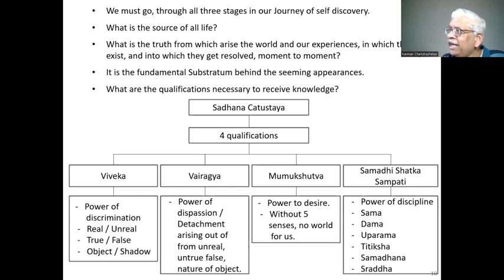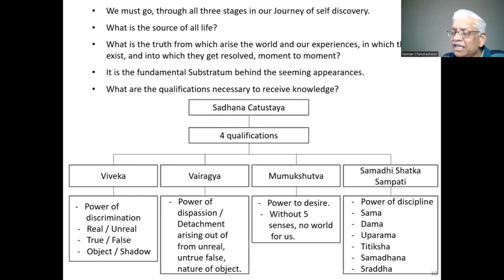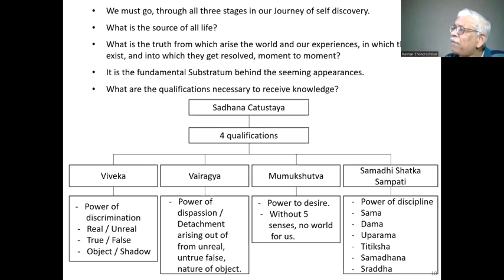Sama means control of the mind. Dama means control of the sense organs. Uparama means stability — the ability to remain in a controlled fashion and continue that control. Titiksha means forbearance — whatever problems come in life, bearing them with fortitude. Samadhana means equanimity of the mind, always remaining balanced. Shraddha means faith. These are the six qualifications — details can be found in Tattva Bodha.